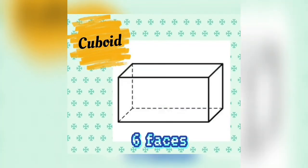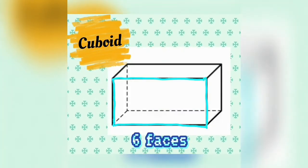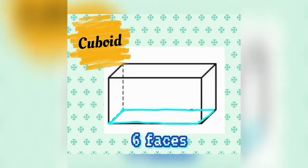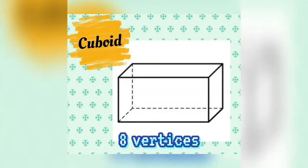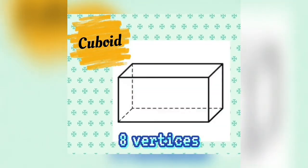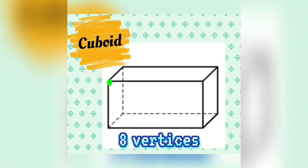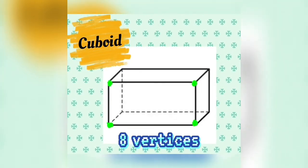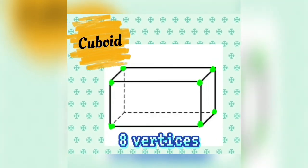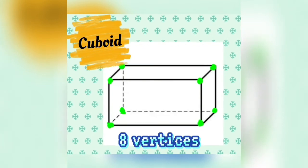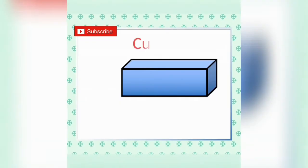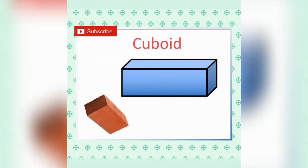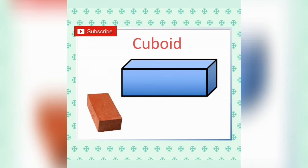It has six faces — one, two, three, four, five, six. It has eight vertices — one, two, three, four, five, six, seven, eight. Here are the examples of cuboid shapes.